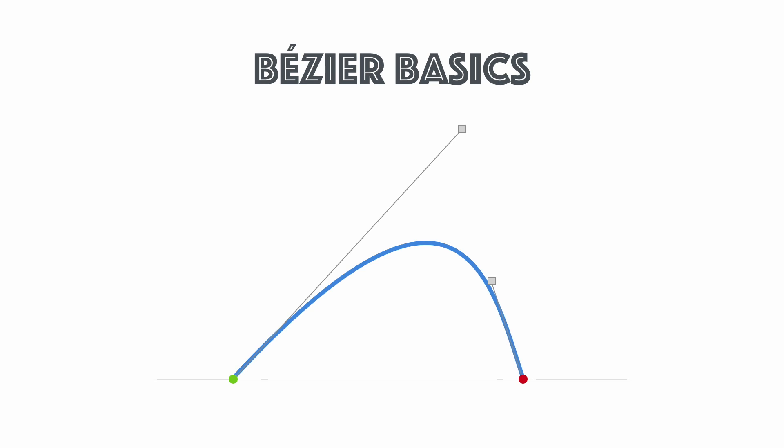What we need is four coordinates: the starting coordinate — the green dot — the end coordinate — the red dot — and then the two squares, which are called control points in Bézier curves. This is what's called a cubic Bézier curve — it has two control points.